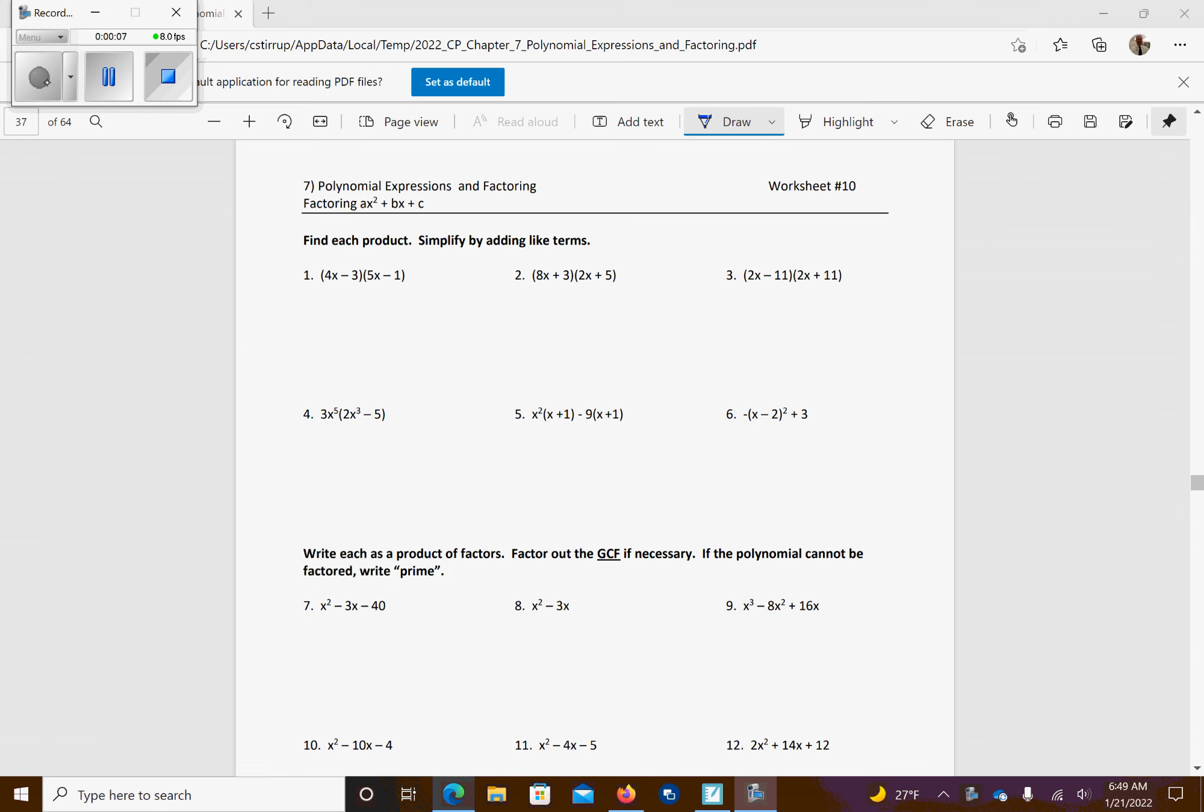We're just going to multiply these together. So 20x squared, 4x, 91, 4, 95x, plus 3. Combine your like terms, 20x squared, minus 19x, plus 3.